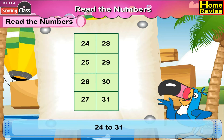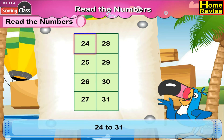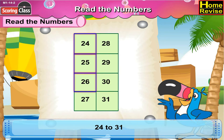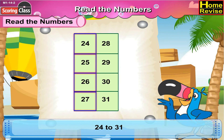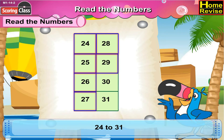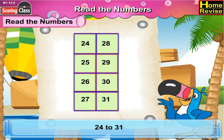Now twenty-four to thirty-one. That would be twenty-four, twenty-five, twenty-six, twenty-seven, twenty-eight, twenty-nine, thirty, thirty-one.